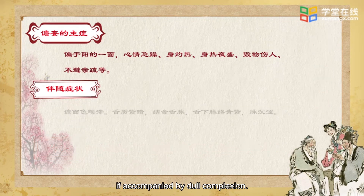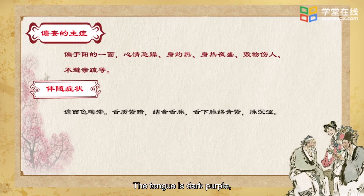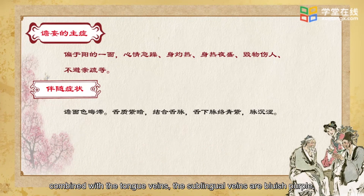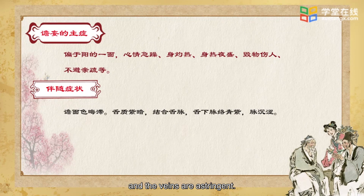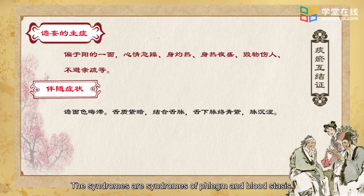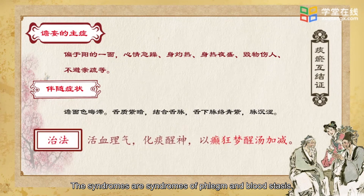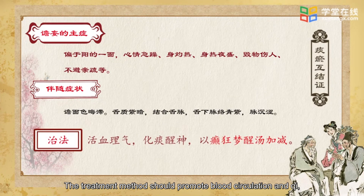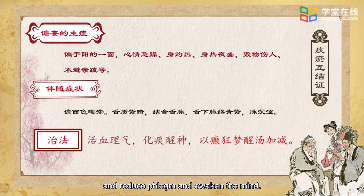If accompanied by dull complexion, dark purple tongue, with sublingual veins appearing bluish purple, and an astringent pulse — the syndromes are those of phlegm and blood stasis. The treatment method should be to promote blood circulation and qi, and reduce phlegm and awaken the mind.